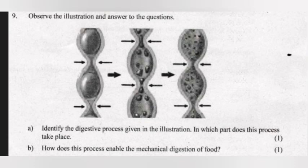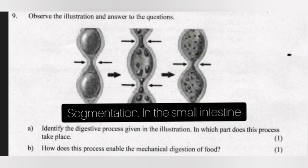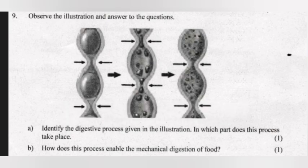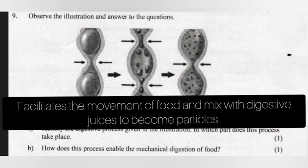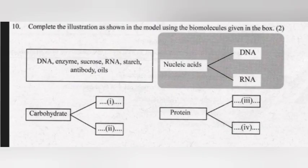Question 9: Observe the illustration and answer the questions. A — Identify the digestive process given in the illustration. In which part does this process take place? Answer: Segmentation in the small intestine. B — How does this process enable mechanical digestion of food? Answer: It facilitates the movement of food and mixing with digestive juices to break food into particles.